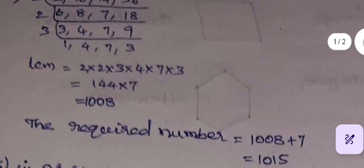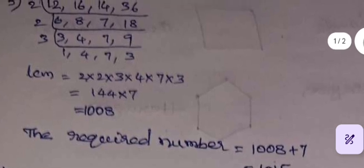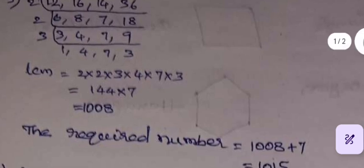The LCM comes out to be 1008. That is 1008, that means 1008 is the least number which is completely divisible by 12, 16, 14 and 36.